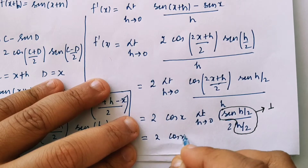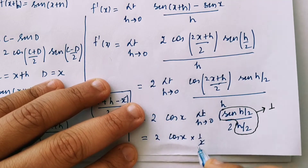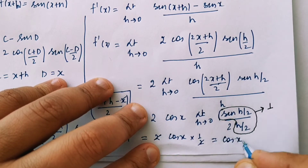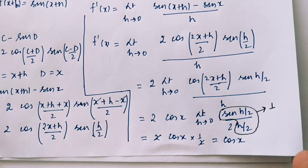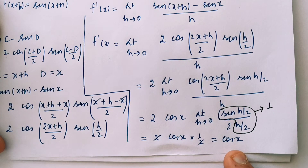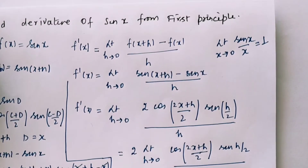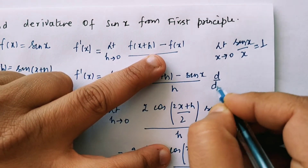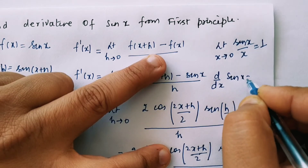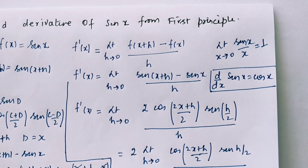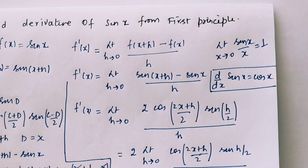Therefore, 2 multiplied by cos x multiplied by 1/2 — the 2 and 1/2 cancel — giving only cos x. So we have confirmed that the differentiation of sin x is cos x. We calculated this from first principles, and as a formula we will remember that dy/dx of sin x is cos x.